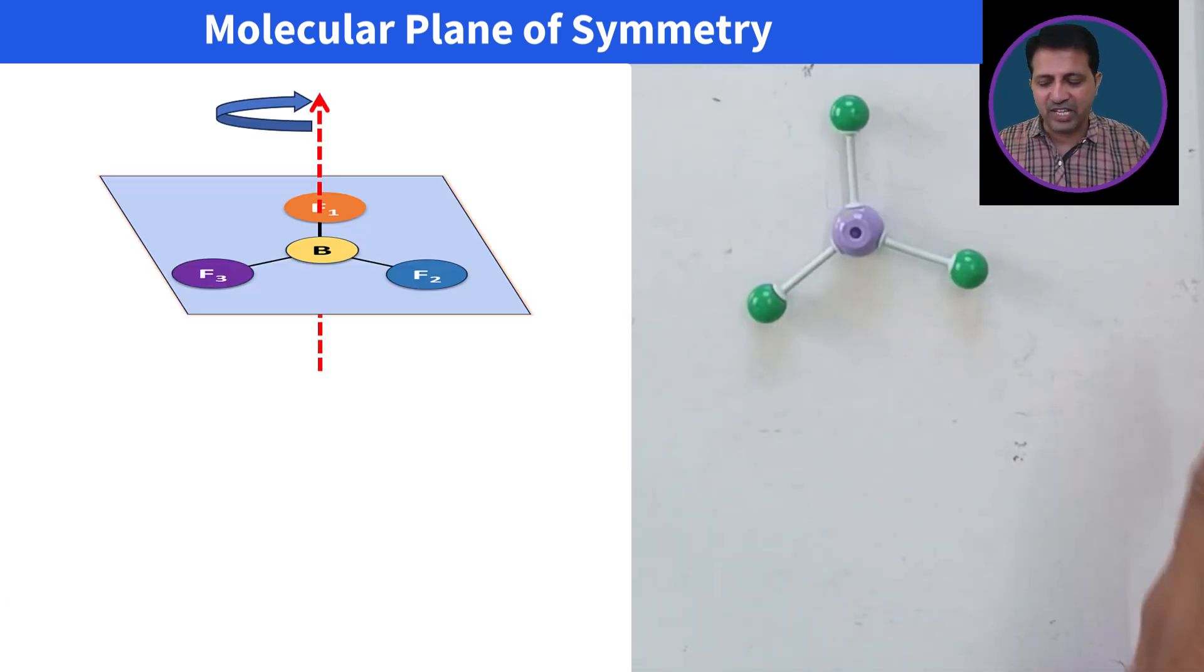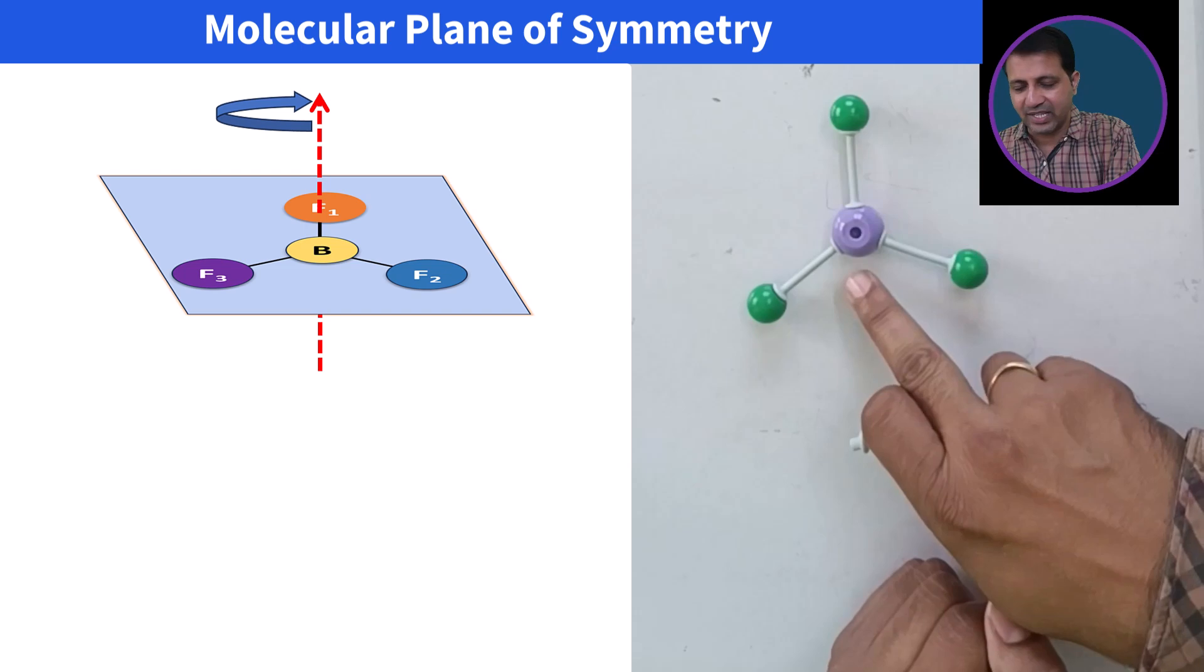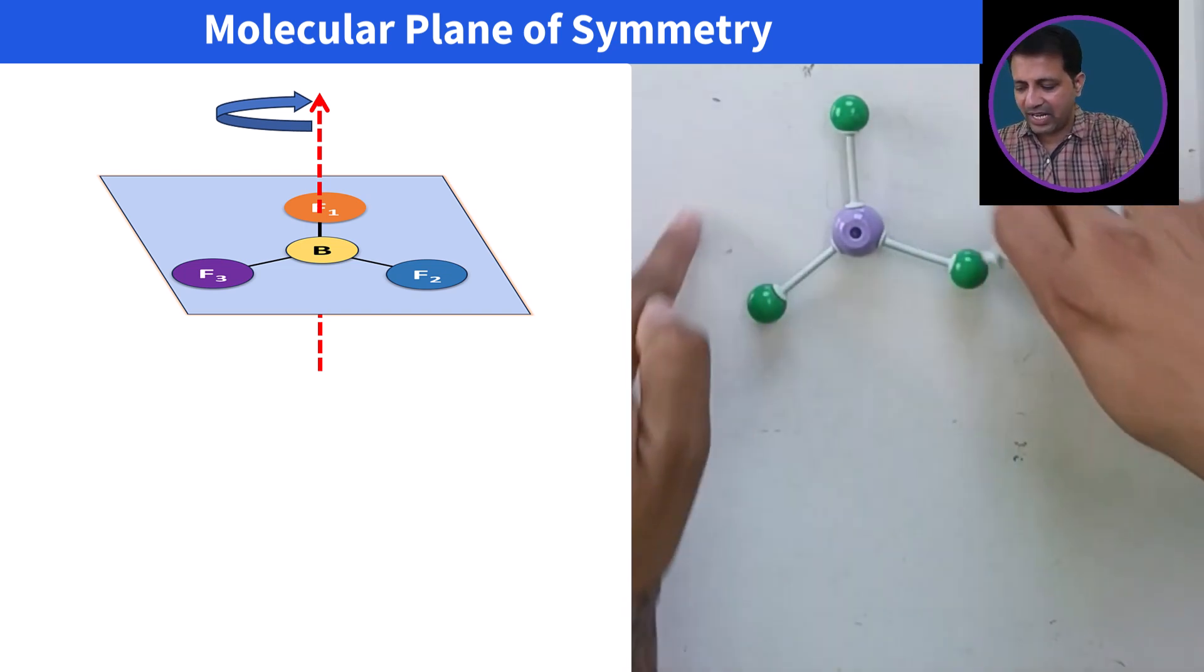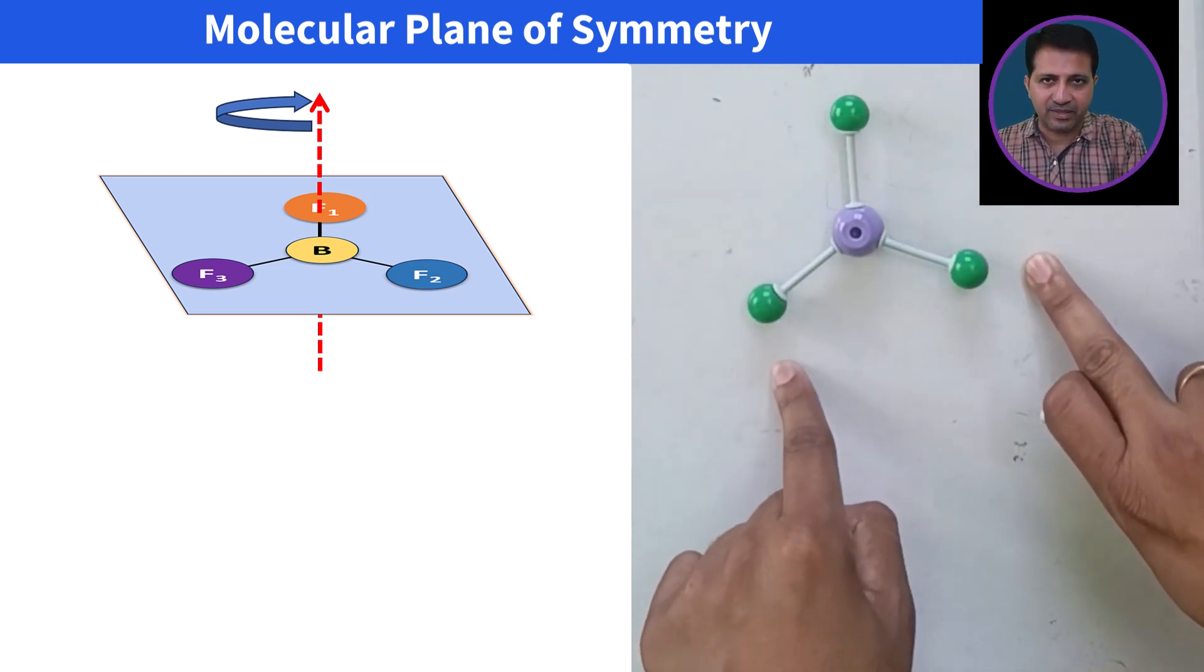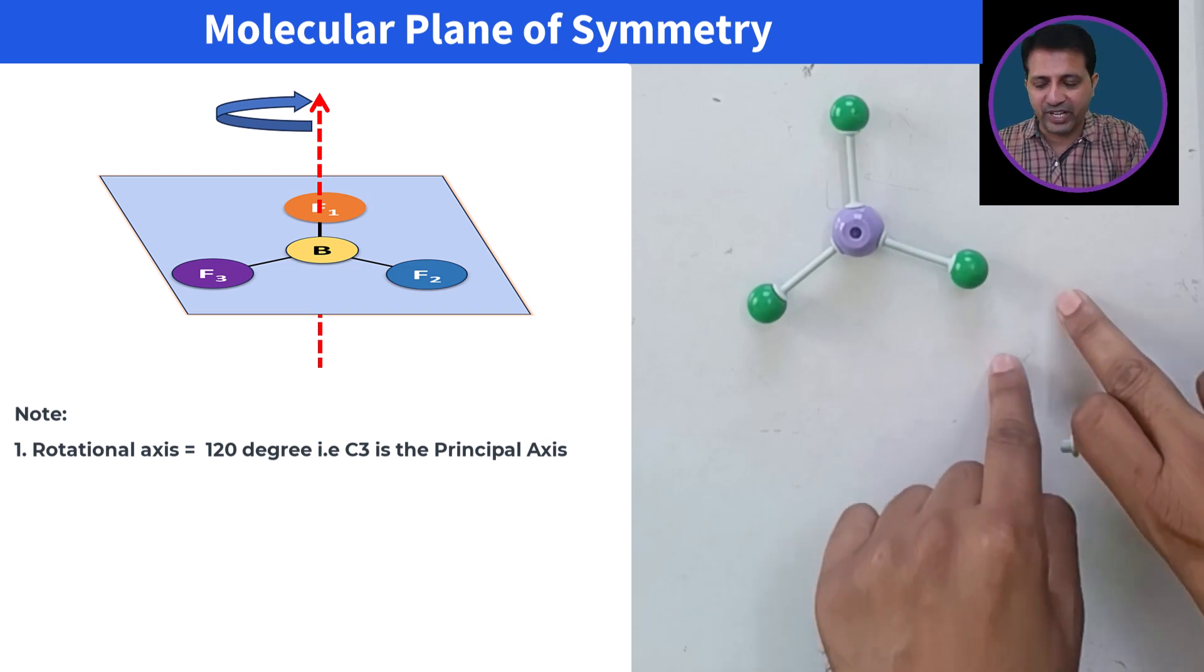Let's take an example of BF3 molecule where boron is at the center while outside there are green colored atoms. These atoms are fluorine atoms.